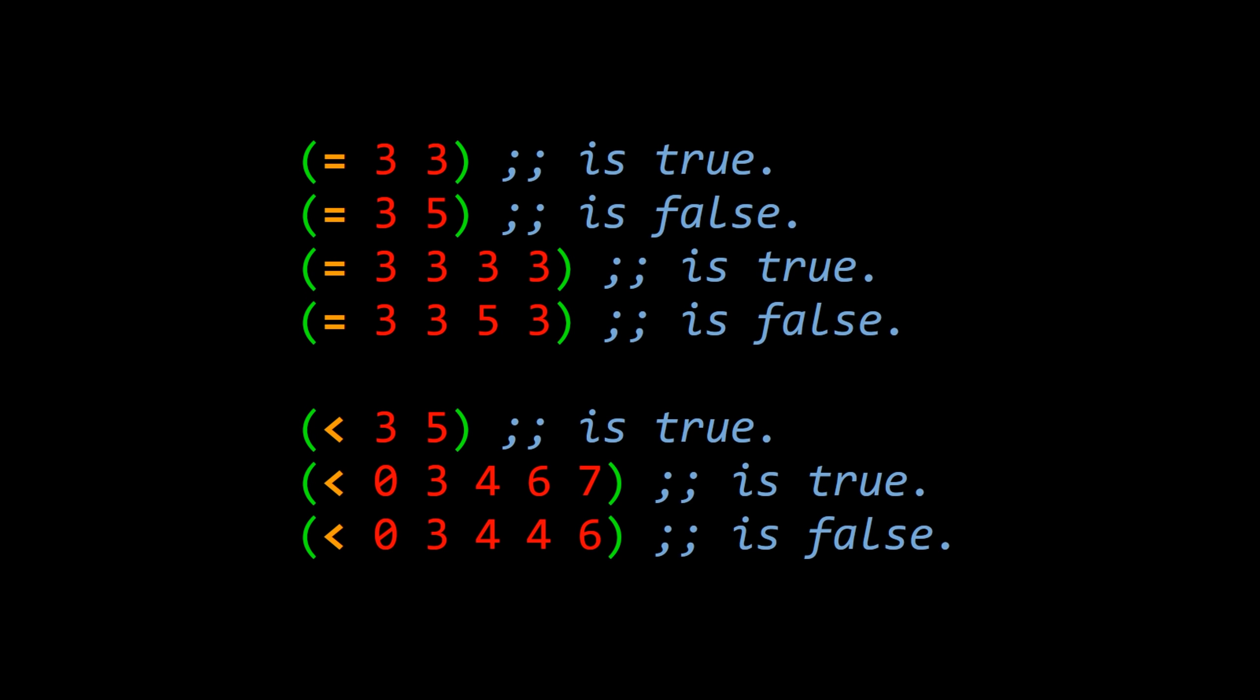So again, that's chaining the equality comparison operator across the entire list. And the same is true for the less than operator applied to the entire list. Below, 3 less than 5 is true. And then a long sequence returning true if it's in strictly increasing order, and false if it's not in strictly increasing order.